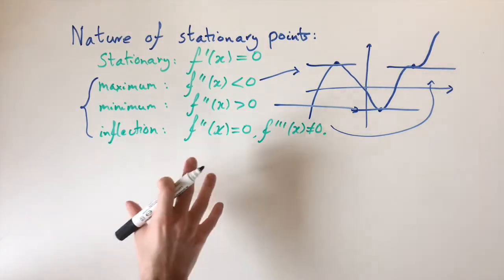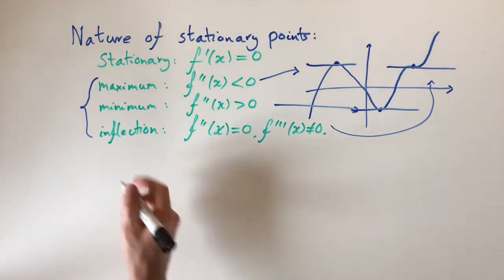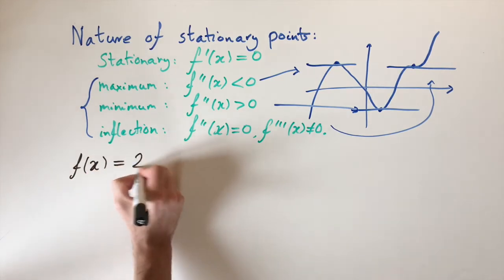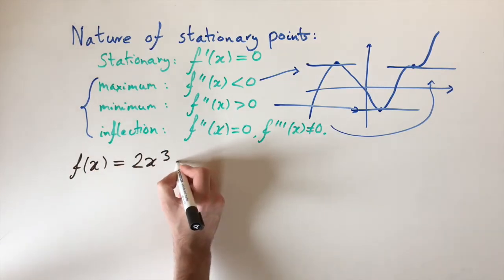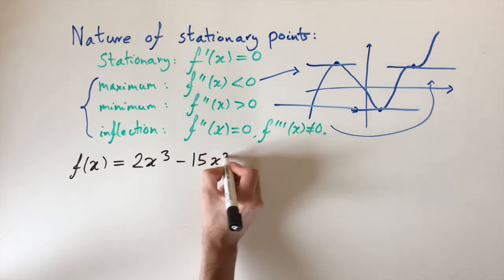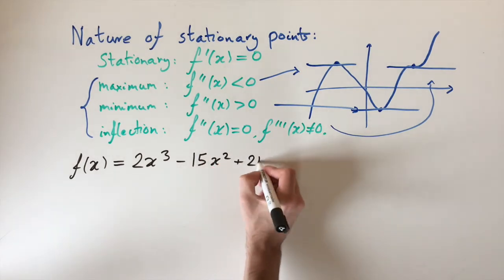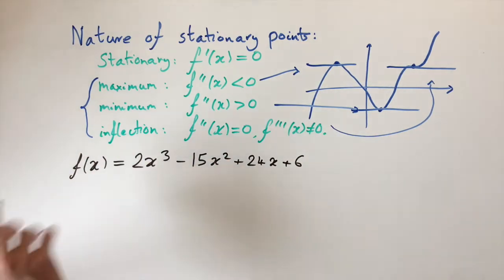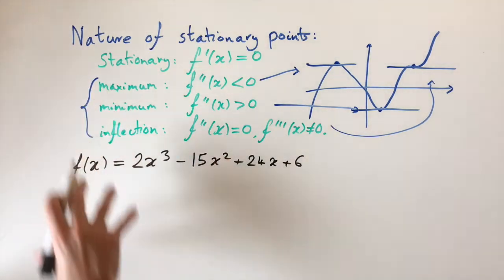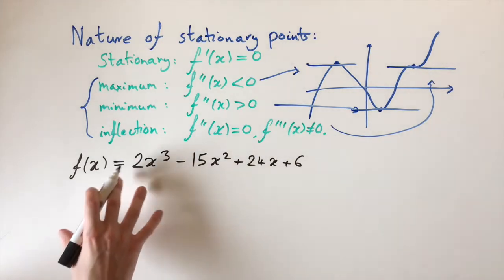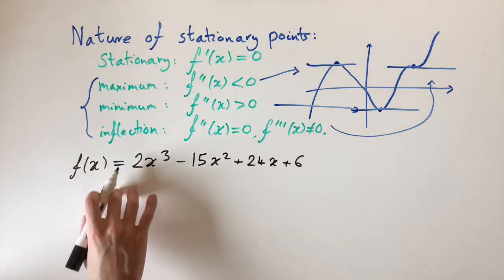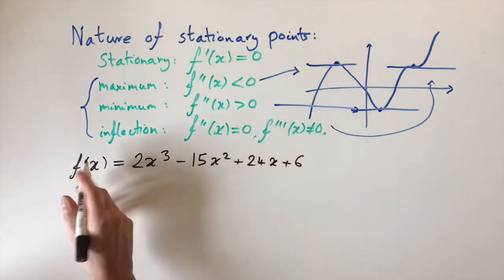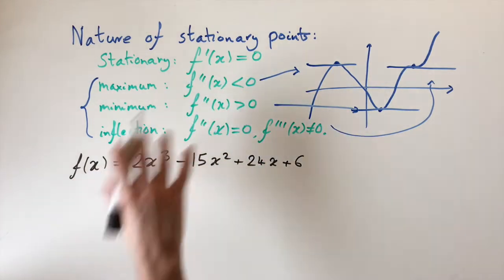This is quite abstract, but we're going to look at some examples. If I look at the function f(x) = 2x³ − 15x² + 24x + 6, we want to find the stationary points and also the nature of the stationary points. It's always going to be the same strategy — we differentiate and we find when the derivative equals zero, which tells us the stationary points.